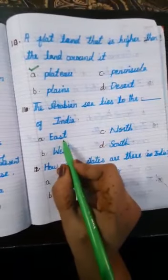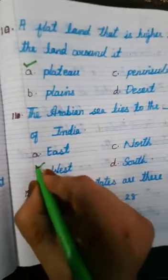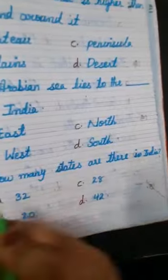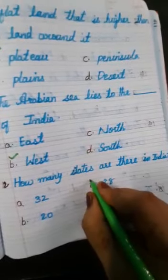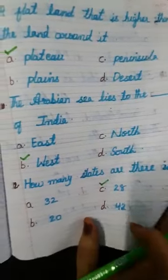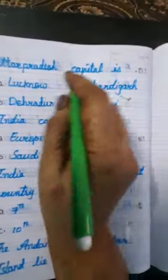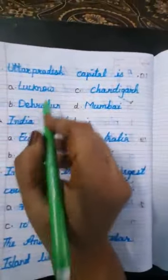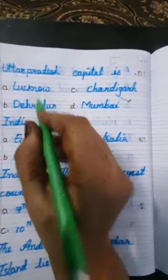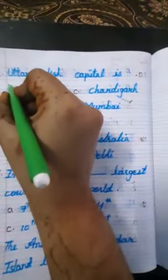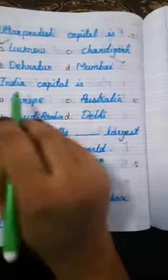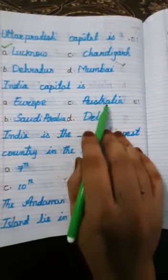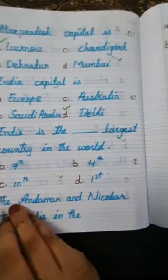The 11th one: the Arabian Sea lies to the dash of India — east, west, north, or south. The correct answer is west. 12th one: how many states are there in India? And India's capital — options include Europe, Saudi Arabia, Australia, Delhi. The capital is Delhi.